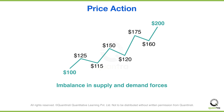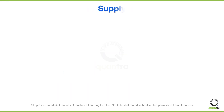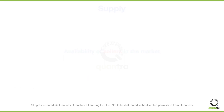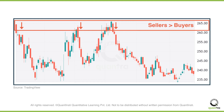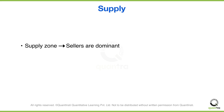Let's understand what supply and demand forces are. Supply is a phenomenon which occurs due to the availability of sellers in the market. Whenever there is an increase in sellers, and when the sellers are more than buyers, there would be a formation of a supply zone on a price chart. This means that more market participants are willing to sell a particular security as compared to market participants who are willing to buy it.